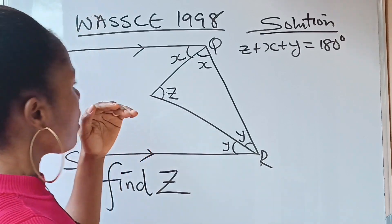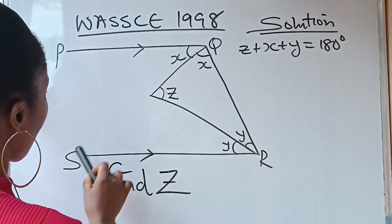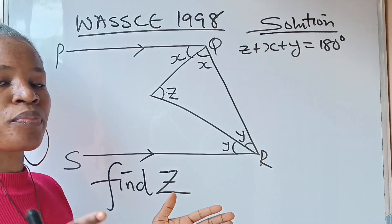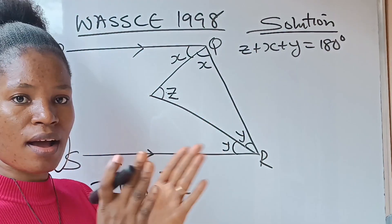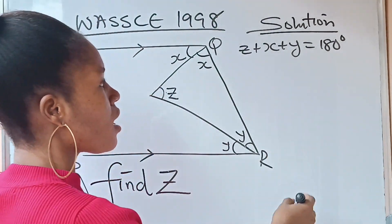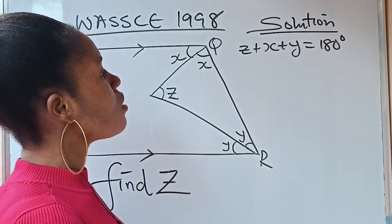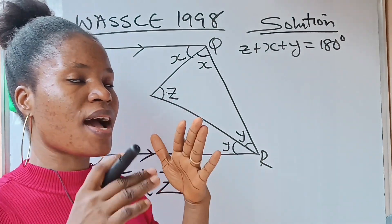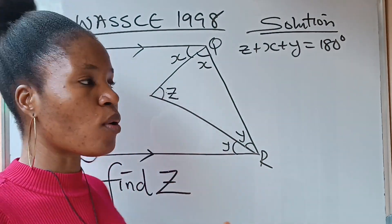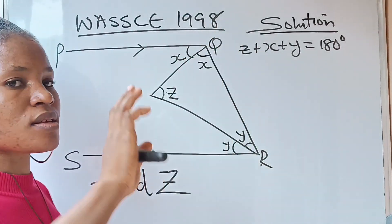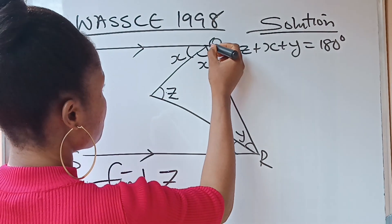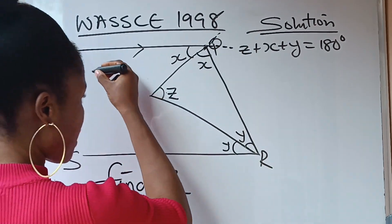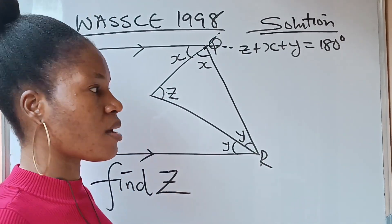Now, PQ and SR — these arrows show that both lines are parallel to each other. Parallel means no matter how far you draw them, they can never cross each other. When two parallel lines are crossed by a transversal, several angles are formed. The line crossing here is a transversal.